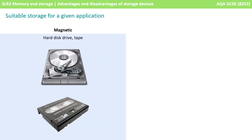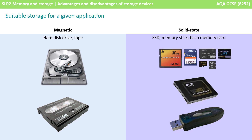Magnetic storage media covers things like magnetic tapes, which are largely out of date, and also magnetic hard drives, which are still very common. Solid state drives include USB or flash drives, solid state hard drives, and a whole variety of SD and memory cards.